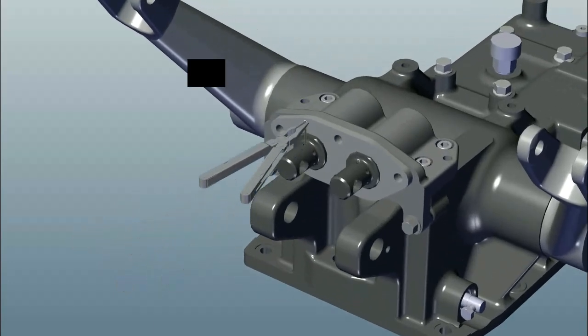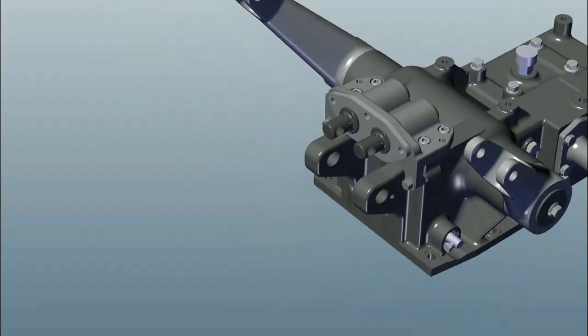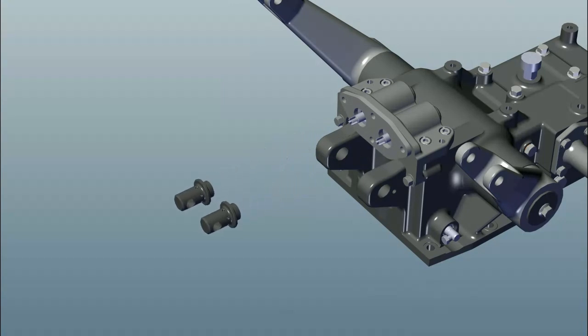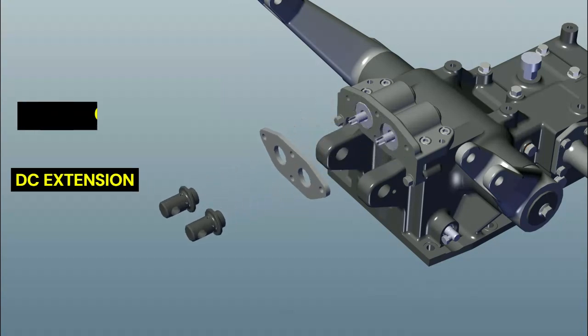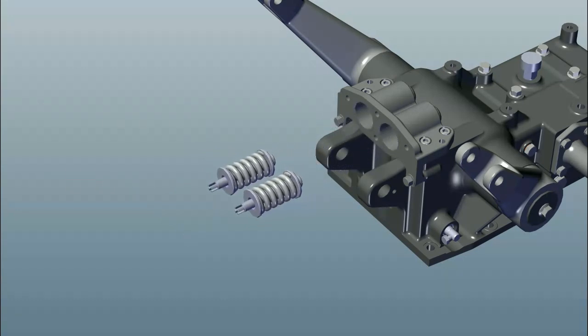Remove cotter pin. Insert Allen key in spindle. Rotate spindle. Remove DC extension. Remove cover plate, cotter pin, and draft control sensing assembly.